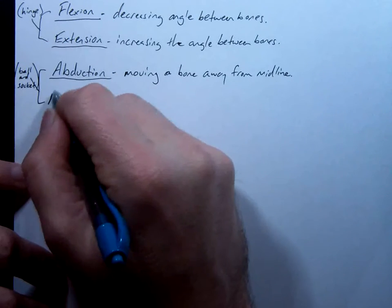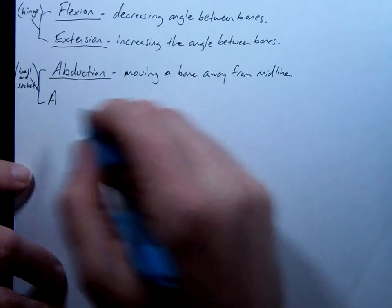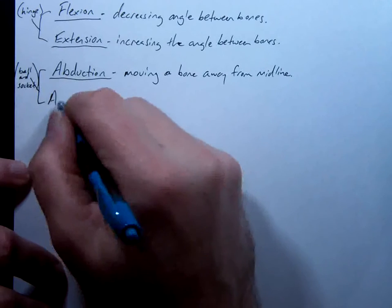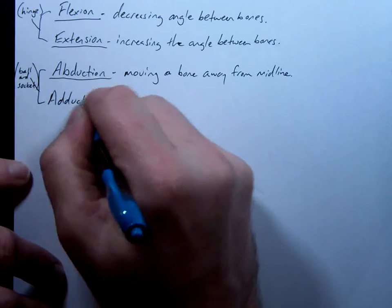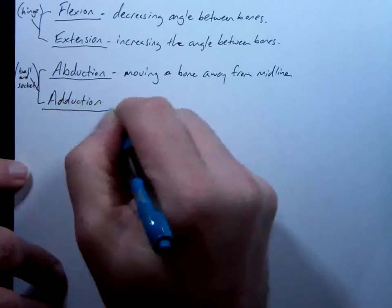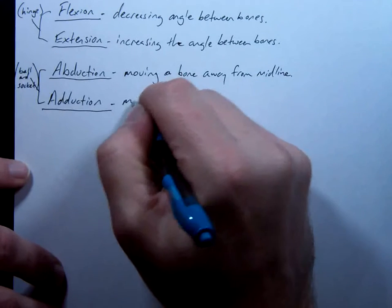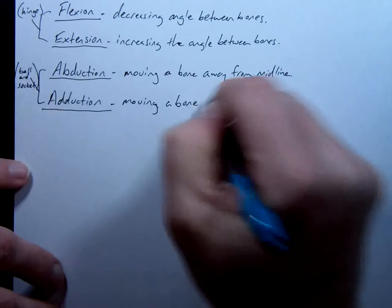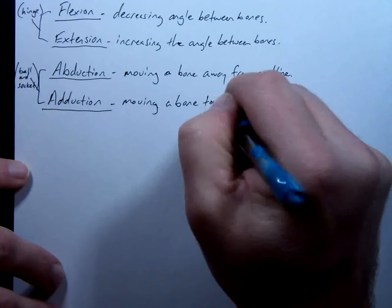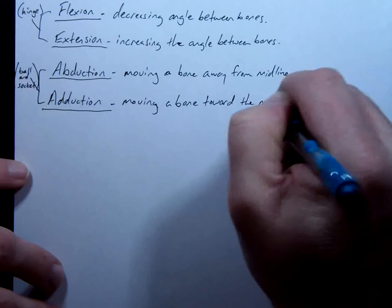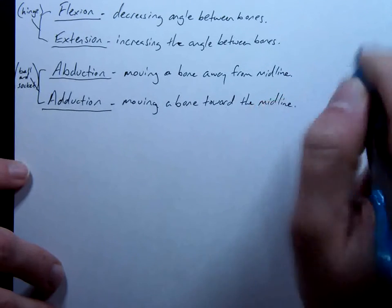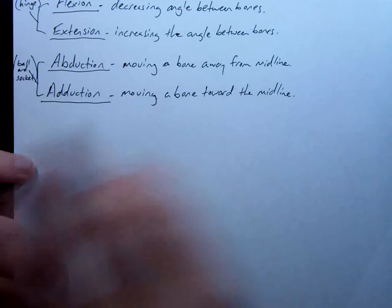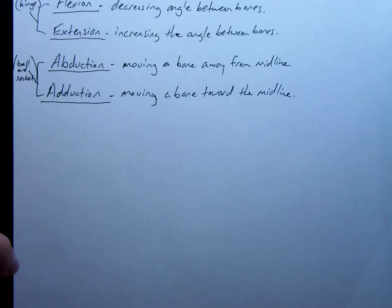Now, this one is so close. Bringing it back is so close that we're just going to flip this letter here. We're from abduction to adduction, which means moving a bone toward the midline. Moving a bone back toward the midline.